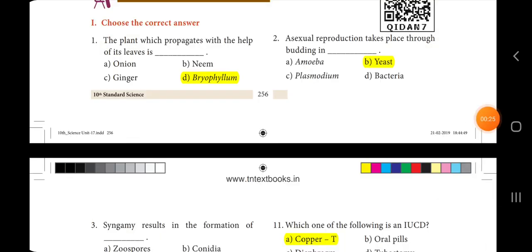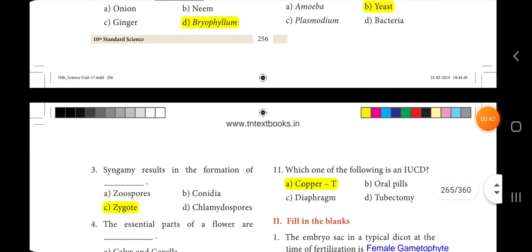First one: the plant which propagates with the help of its leaves is dash. The answer is bryophyllum. Second one: asexual reproduction takes place through budding in dash. The answer is yeast, option B.